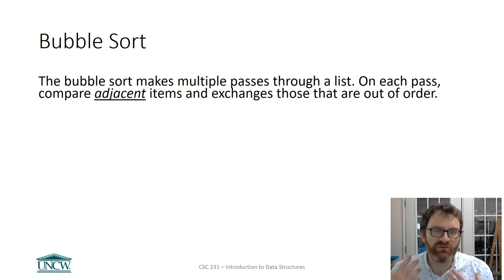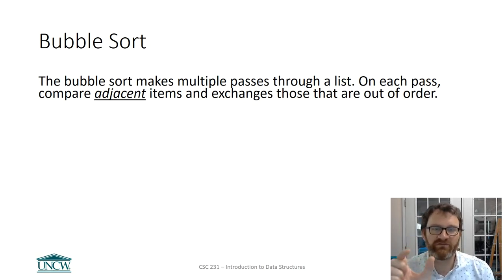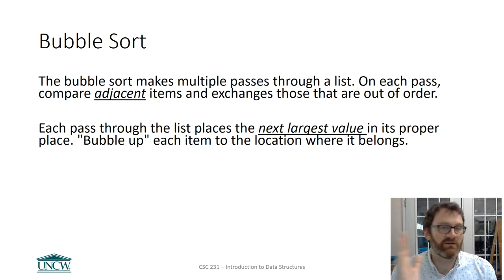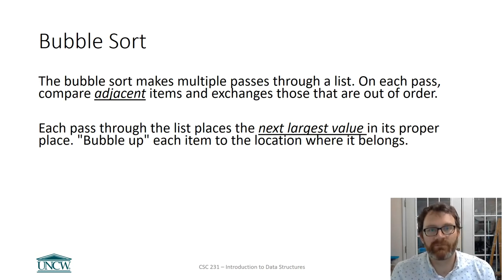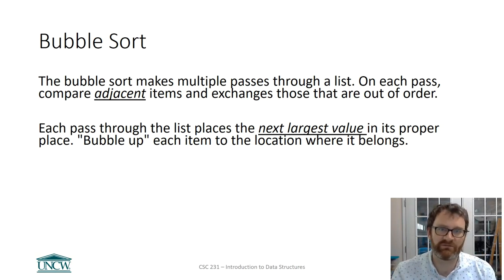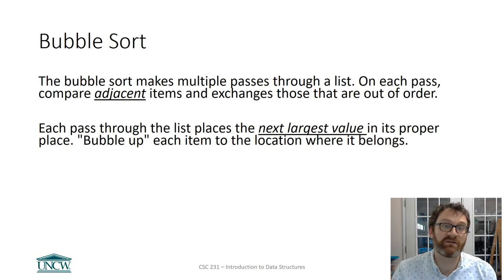The intuition of bubble sort is that on each pass through the list, you are going to compare adjacent items and exchange items that are out of their natural ordering. The effect is that each time you go through the list - and you're going to have to go through multiple times - you're going to place the next largest value where it should be. This is where bubble sort gets its name: each pass through the list, on the first pass, you bubble up the largest element to its final spot. On the second pass, you bubble up the second highest value to its final spot, and those spots are going to be at the end of the list.